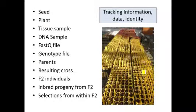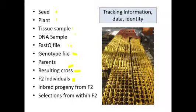To do rapid cycling, it does take a high degree of management. You have to maintain your seeds, plants, identify samples, DNA samples, your FASTQ files, your genotype files, parents, resulting crosses, F2 individuals, sometimes inbred progeny from the F2s, and selections from within the F2. There's a lot of information that needs to be managed — lots of tracking information, data, and identities. This shows a picture of probably about a thousand F2 plants that are all staked, identified, genotyped, and will be selected amongst using genomic selection.